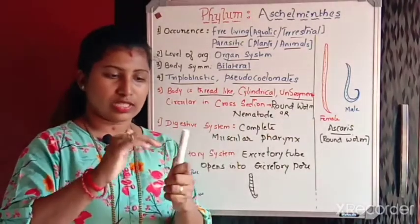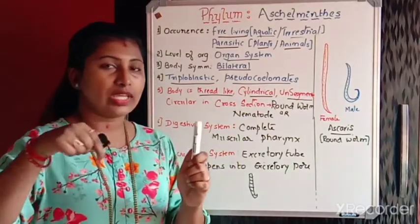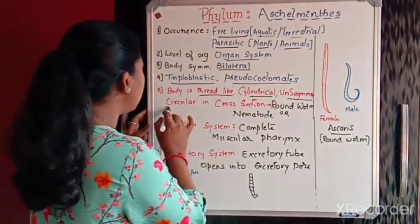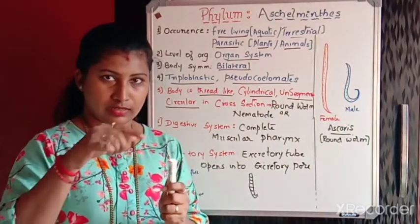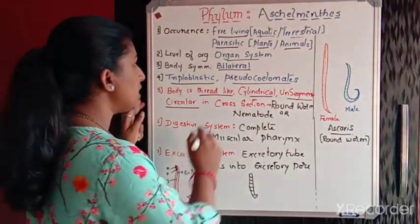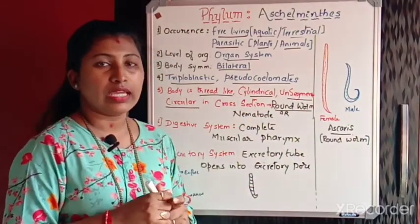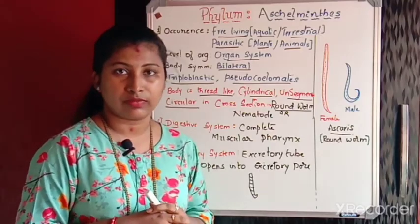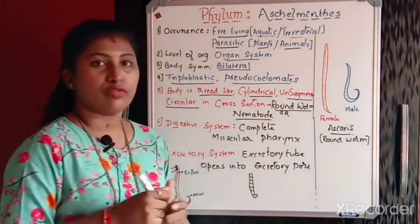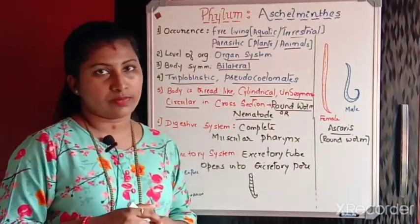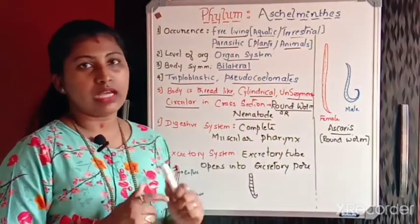If you take the cross section of this worm, you can see a circular form. That is why these worms are also called roundworms. In Kannada they are called dundu hula. There is one more name for these worms: they are called nematodes. So nematodes and roundworms are alternate names for these animals.